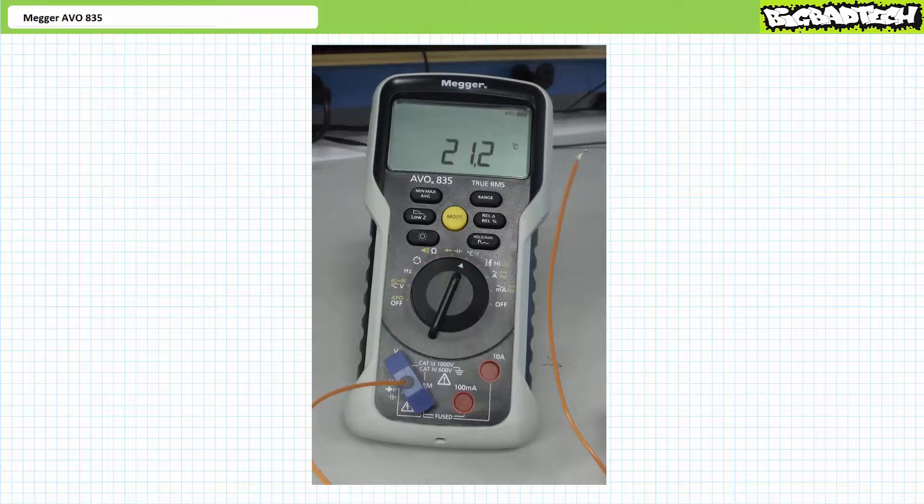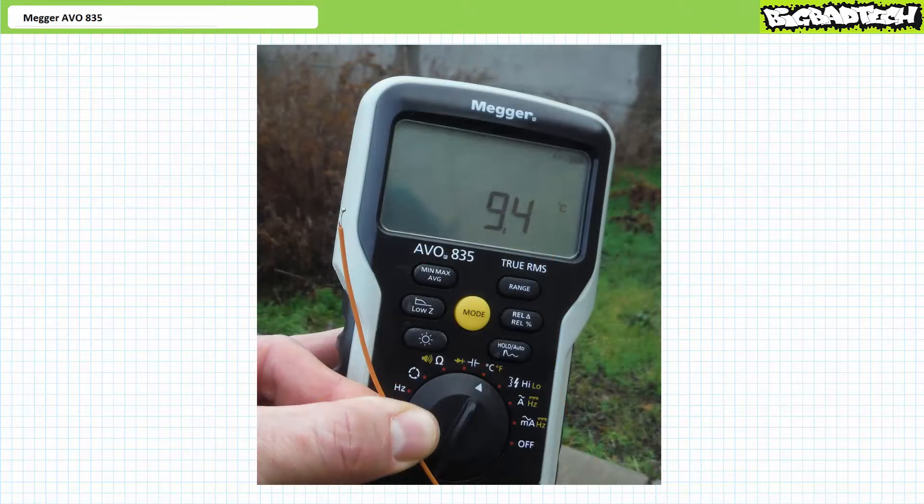After a brief moment, temperature stabilizes and is displayed upon the primary screen. Looks like this lab is a balmy 21.2 degrees Celsius, equivalent to roughly 70 degrees Fahrenheit. If I go outside on a wet day, it looks like the temperature has dropped to roughly 9.4 degrees Celsius.